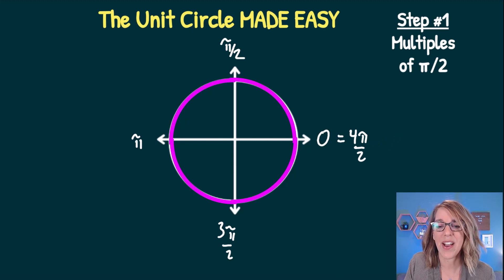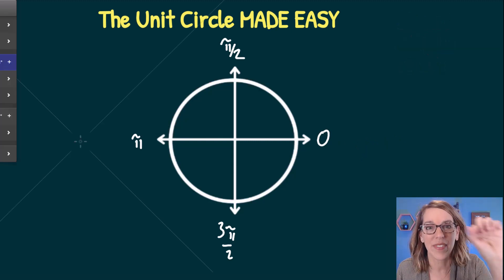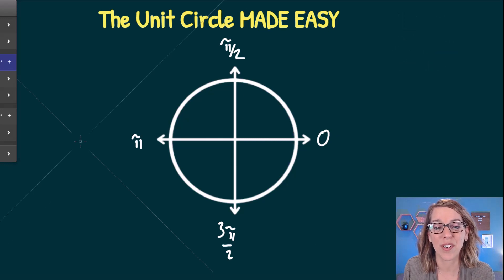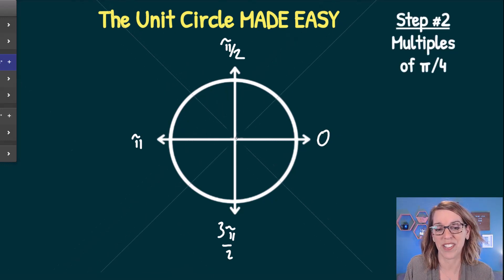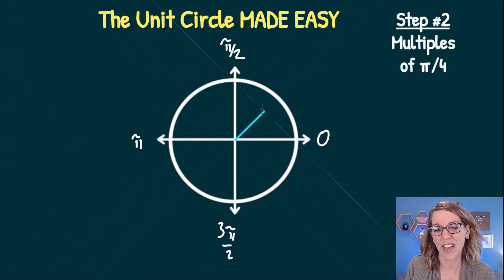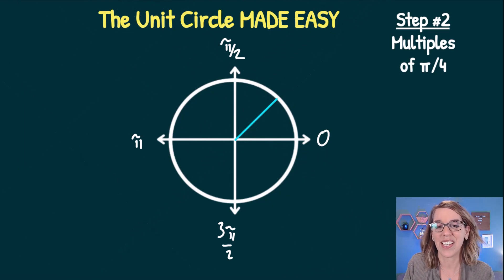Now let's do the same using a different angle. We'll divide up the rotation of the unit circle into 45-degree increments, or pi-fourths. The first 45-degree angle lands us at pi-fourths.